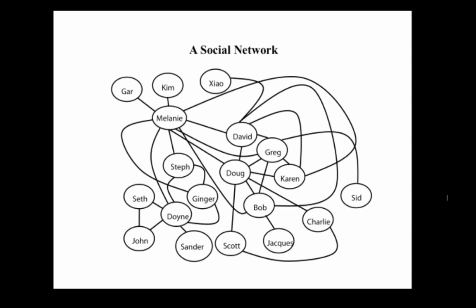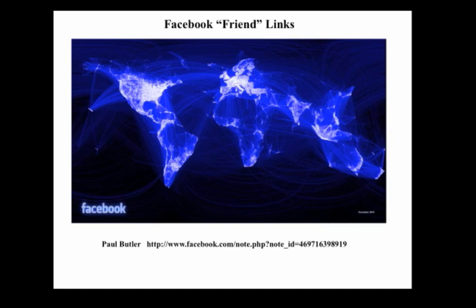Probably the kind of network you're most familiar with is a social network. Here's part of my own social network, where links represent friendship relationships — my friends are linked to their friends, and so on. Social networks turn out to have some very interesting patterns that also turn up in biological and technological networks, which we'll look at in depth later. Complex systems scientists are very interested in studying large social networks such as Facebook to understand their structure, how they form, how they change over time, and how information is transmitted in such networks.